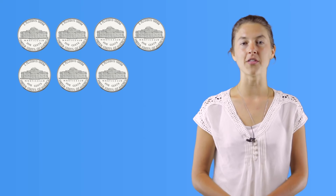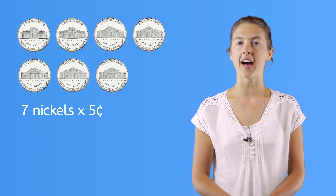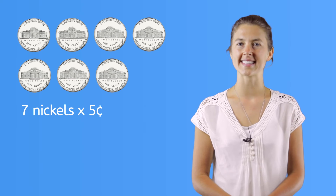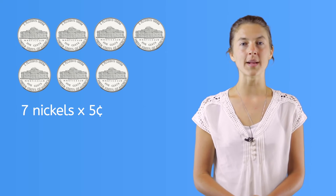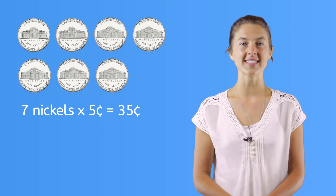Next, let's count nickels. Be careful! We can't count nickels as we'd count pennies, because nickels are worth 5 cents each. This means we'll need to count by 5s. Let's do it! 5, 10, 15, 20, 25, 30, 35. We have 35 cents! Did you know that we can use a shortcut to count nickels? If you know how to multiply, we can count the number of nickels you have in all and multiply that by 5, since nickels are worth 5 cents. Since we have 7 nickels, we can multiply that by 5, and we get 35 cents. We're right!